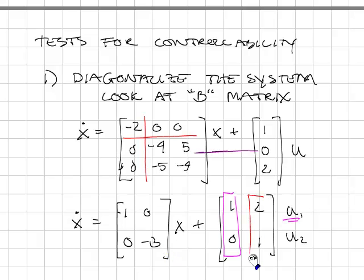u2, on the other hand, will control both states because both elements in the B matrix are non-zero. It's also possible to have a situation where u1 would control only the first state and u2 would control only the second state. In that case, the system would still be controllable as long as we were allowed to use both inputs.